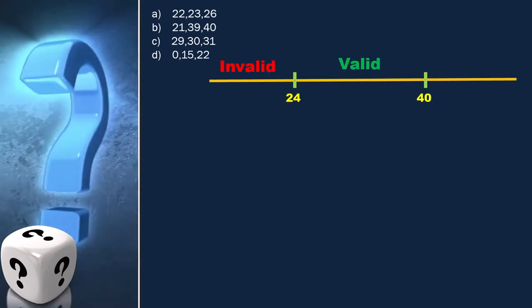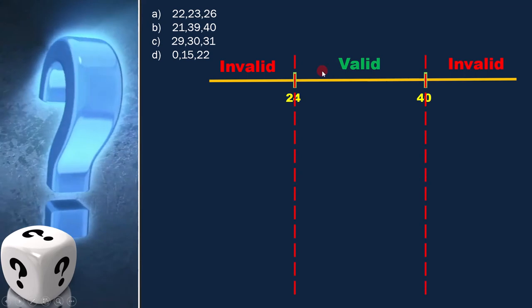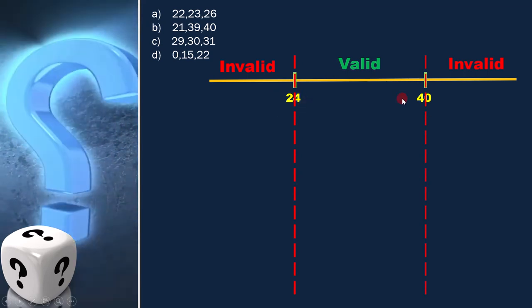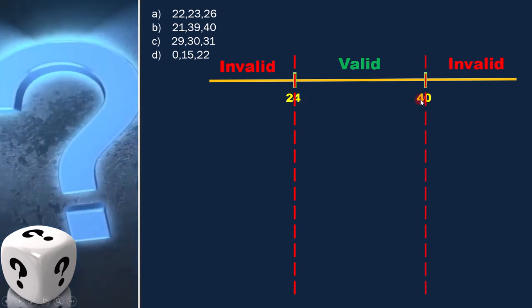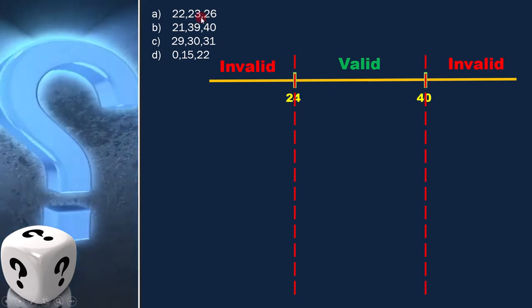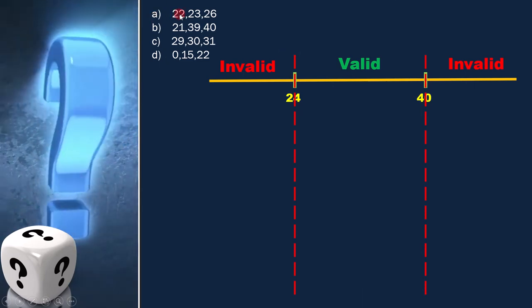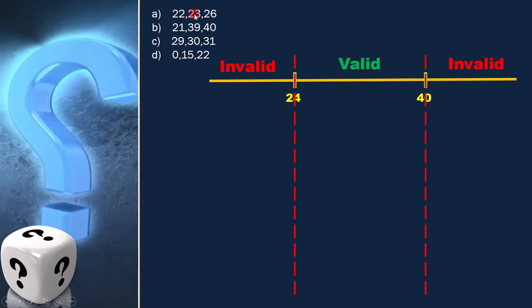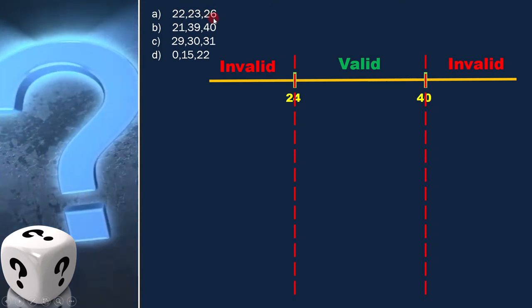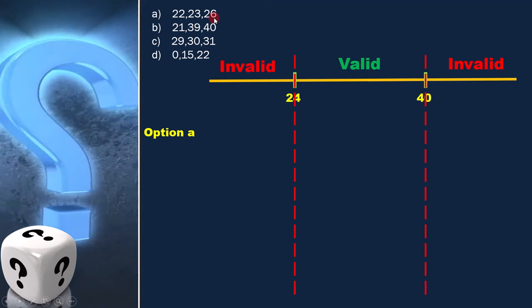Let's first draw the equivalence class diagram. As per the question, value in the range 24 and 40 is valid. Now, let's have a look into the options. The first option is 22, 23, and 26, and we can place them here.